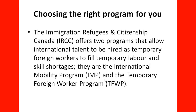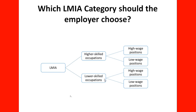For the employer, it is important to choose the right program. Immigration, Refugees, and Citizenship Canada, IRCC, offers two programs that allow international talent to be hired as temporary foreign workers to fill temporary labor and skill shortages: the International Mobility Program, IMP, and the Temporary Foreign Worker Program, TFWP. In cases where an LMIA is needed, the employer must choose the category under which they will apply.